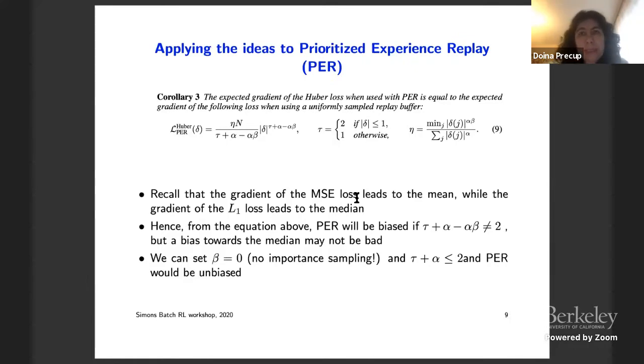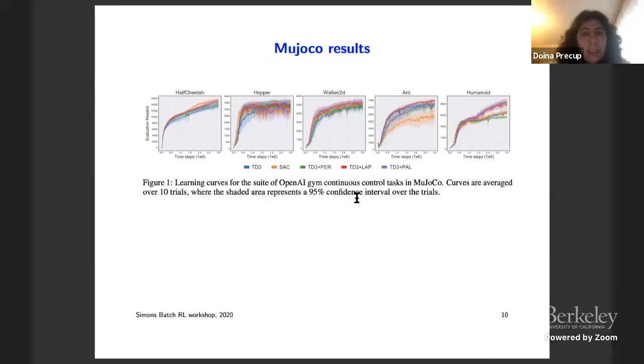And so one thing that comes out of this expression when we analyze this loss is that prioritized experience replay, in fact, is going to be biased. Something that's a bit harder to see when you look at the algorithm rather than looking at this loss. And the bias is towards the median of the samples rather than towards the mean of the samples. But this bias is something that we can actually control by playing around with the way in which the sampling happens and also with these hyperparameters here. And so we essentially now have a knob that allows us to do prioritized experience replay with a trade-off between its bias and its error. So we've tried these algorithms on several tasks.